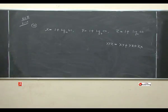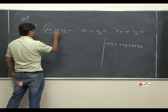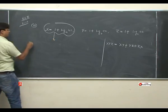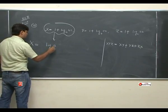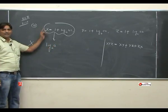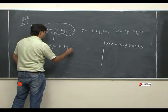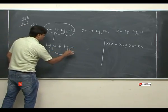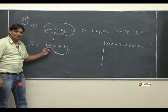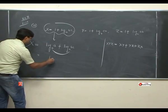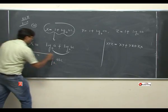यह prove करना है। अब x की बात करते हैं: x = 1 + log bc base a. मैं 1 को log a base a लिख सकता हूँ। तो x = log a base a + log bc base a. दोनों base a हैं, तो plus into में convert होगा → x = log(abc) base a.